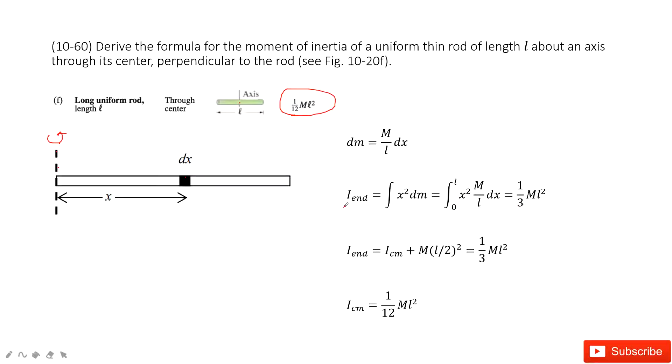After we do this integral, we find the moment of inertia for this rod. Now one end is 1 over 3 ml squared. Now if we want to find the moment of inertia at the center, how can we do that?